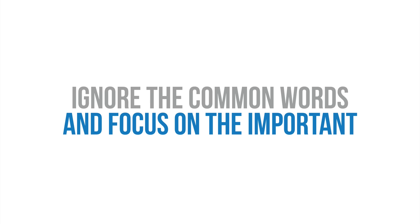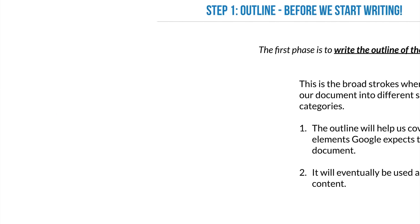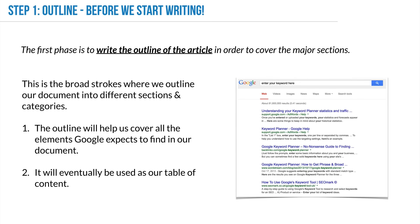Here's kind of like the recipe. The first thing to do — even before you start writing — is to write an outline of the article. This makes everything else easier and is one of the most important steps. Think of this as your research in order to write good content. The outline is basically your recipe; it helps you cover all the elements that Google expects to find.